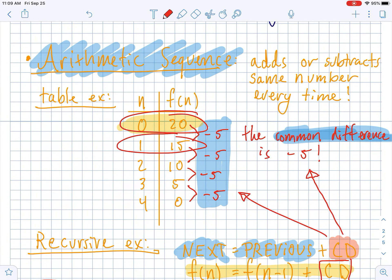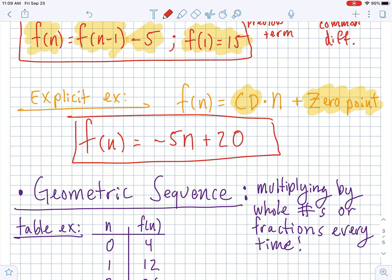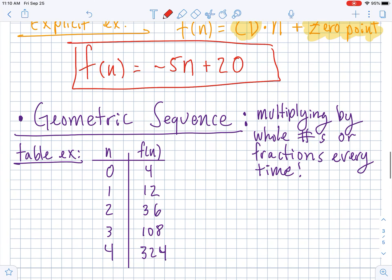So arithmetic adds or subtracts the same number every single time. You can look at it through tables, recursive definitions, or explicit definitions. You could also do it with a dot diagram. Any of this can be done with dot diagrams where you would just kind of have to count up how the dots are changing, but I would probably just throw that into a table and then start from here.